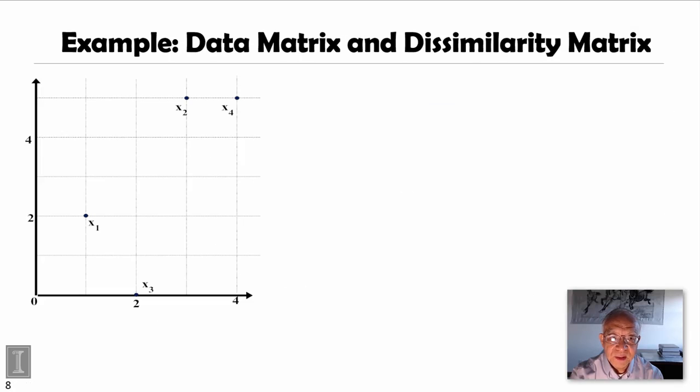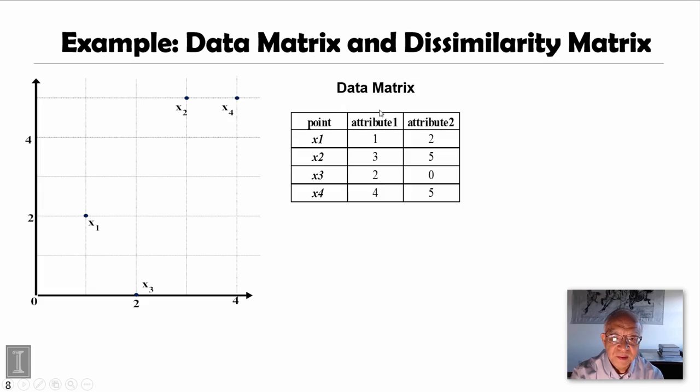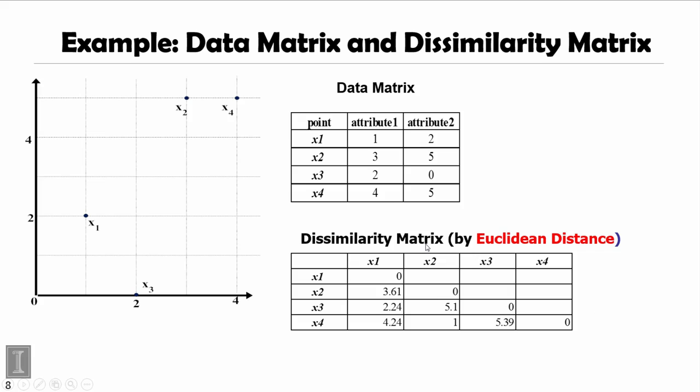Then we look at an example. Suppose we have four points, four objects, in two-dimensional space. Then the data matrix is represented in this typical form. For dissimilarity matrix, or distance matrix, for Euclidean distance, you can see the matrix is in this way. Like x1, x1, they are identical, their distance is zero.